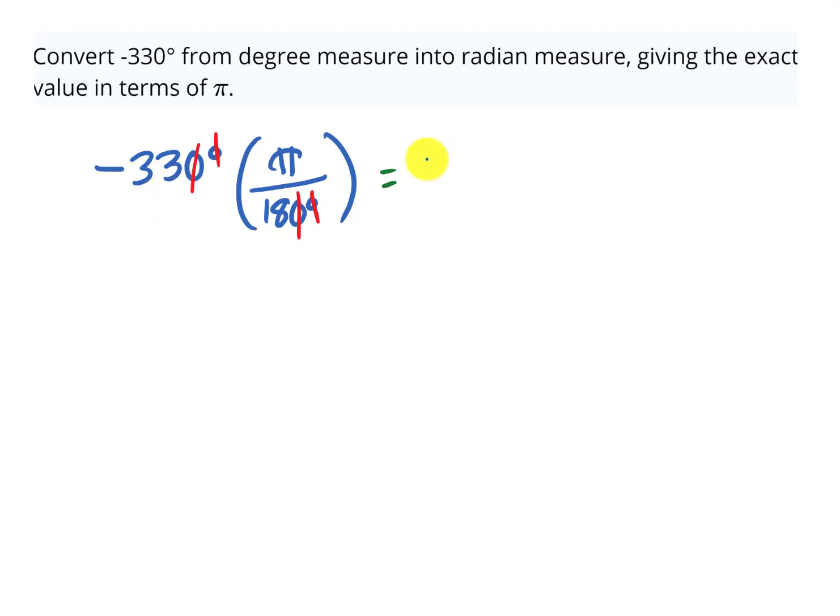Negative 33 divided by 3 is negative 11 pi, and then we have 18 on the bottom divided by 3 is going to be 6. So negative 330 degrees in radians is negative 11π/6.